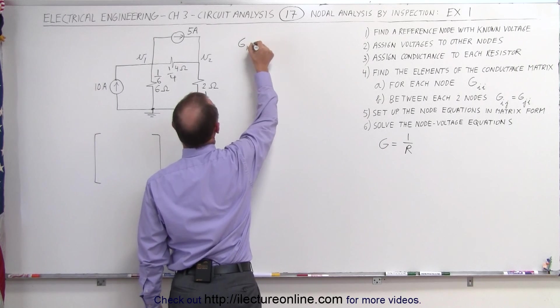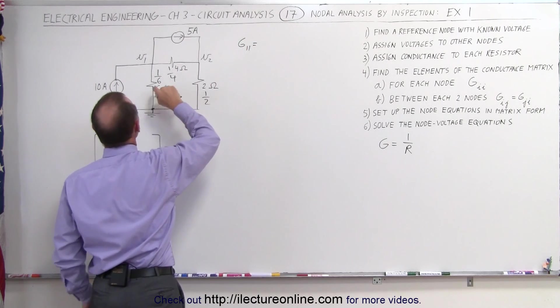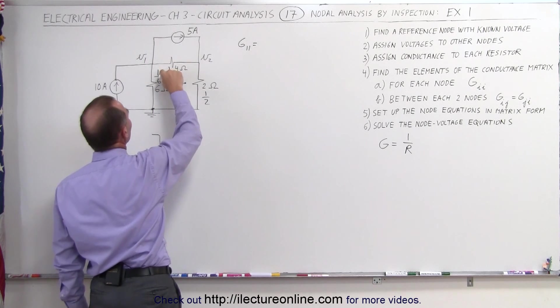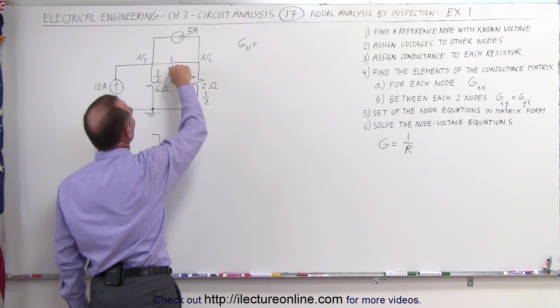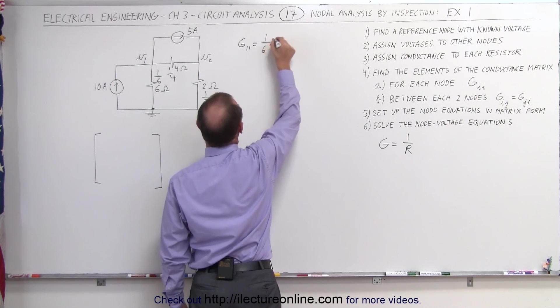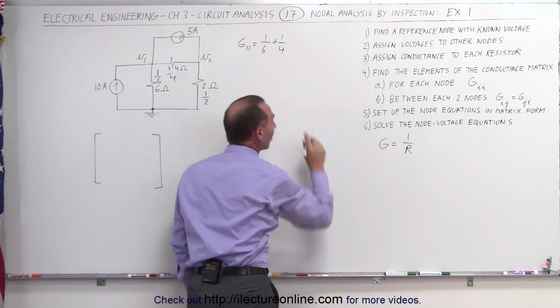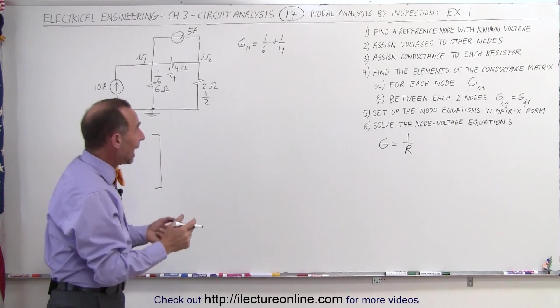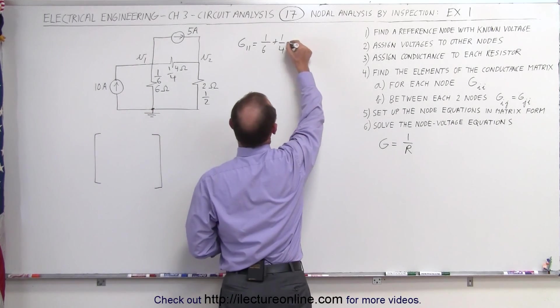To illustrate that, G11 is simply the addition of all the conductances directly connected to V1. So in this case, 1/6 is connected to V1, and 1/4 is connected to V1. So 1/6 plus 1/4 is the sum of the conductances connected to V1. If we want to add that, we need a common denominator, which would be 12.